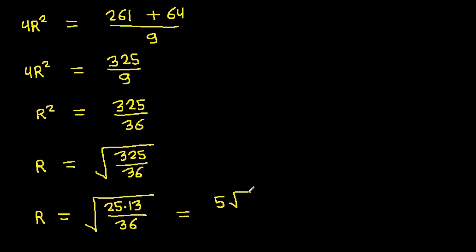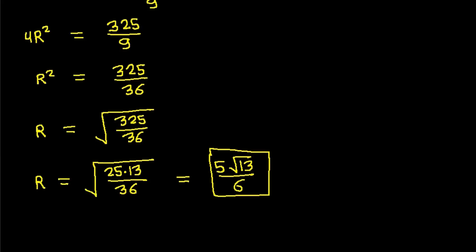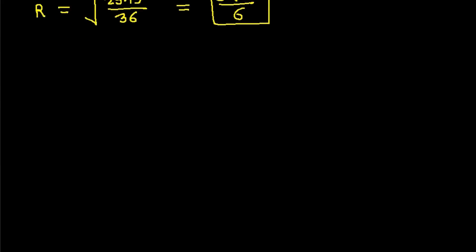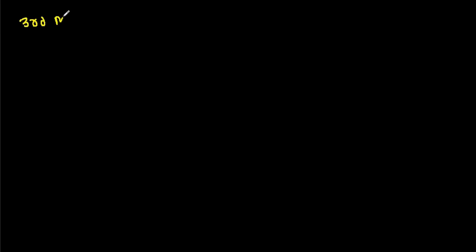4R squared equals 29 plus 64 over 9, which is 261 over 9 plus 64 over 9, giving 325 over 9. So R squared equals 325 over 36, and R equals root of 325 over 36, which is 5 root 13 over 6. And the third method: